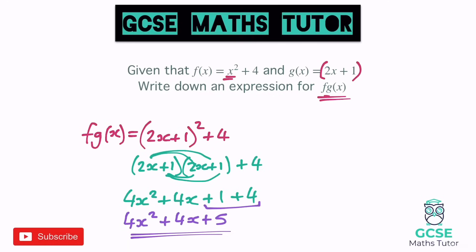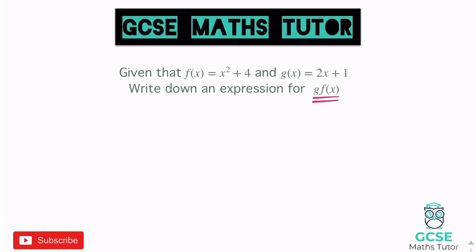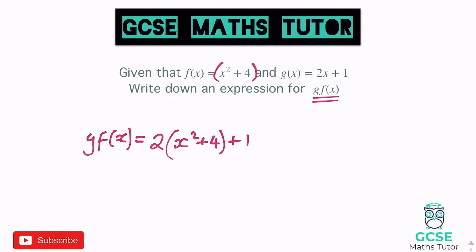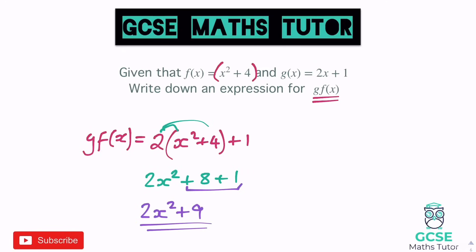Let's have a look at another one where it's the other way around — same functions, but we look at gfx. This means what's g when we put f in. So put the bracket around the f function and sub that into g. We've got 2 lots of the bracket — 2 lots of x squared plus 4 — and then at the end plus 1. Expanding that: 2 lots of x squared is 2x squared, 2 lots of 4 is 8, and not forgetting to add the 1 at the end. Adding those together: 2x squared plus 9. That's our expression for gfx.